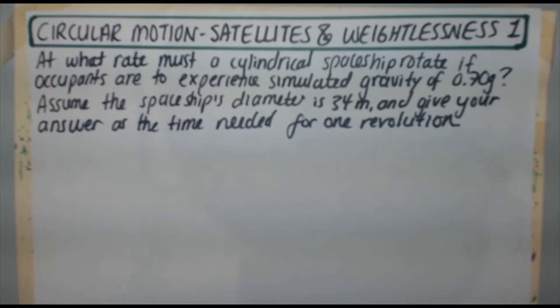At what rate must a cylindrical spaceship rotate if occupants are to experience simulated gravity of 0.70g? Assume the spaceship's diameter is 34 meters and give your answer as the time needed for one revolution.